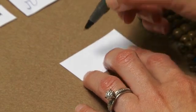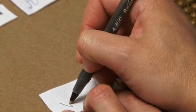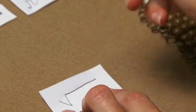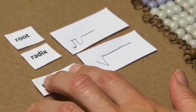Over time, it got changed again, and it became something that looks more like a V with a line extending from it. And now in our terminology, we call that the radical sign.